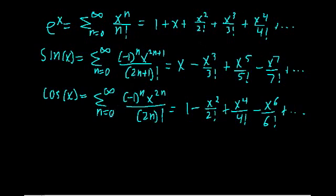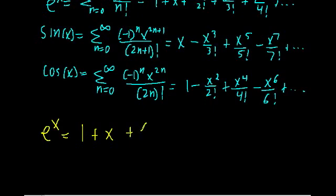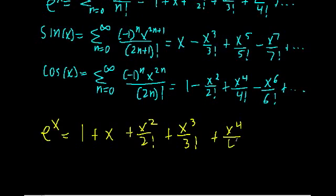Let's first start off with e to the x. We're just going to rewrite it: e to the x is equal to 1 plus x plus x squared over 2 factorial plus x cubed over 3 factorial plus x to the 4th over 4 factorial, and it goes all the way up to infinity.